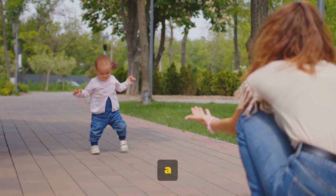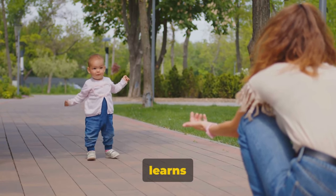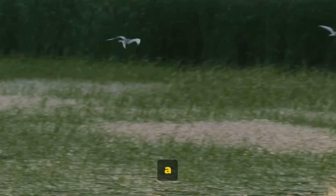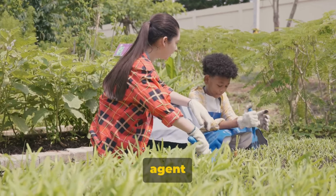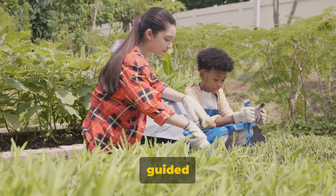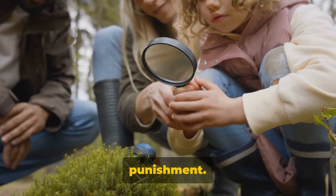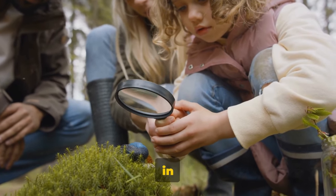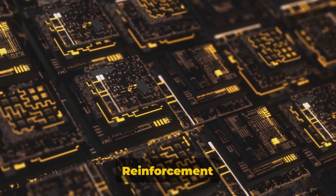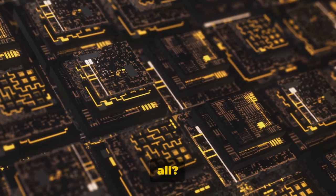Ever pondered over how a child learns to walk or how a bird learns to fly? Reinforcement learning, a type of machine learning, operates on a similar principle. It's about an agent learning to make decisions based on interactions with its environment, guided by reward and punishment. Reinforcement learning, in essence, is about learning from the consequences of our actions.